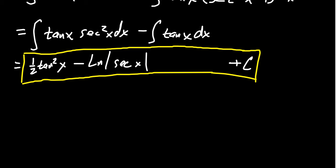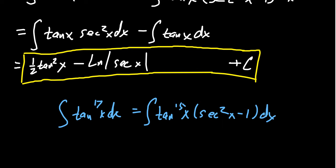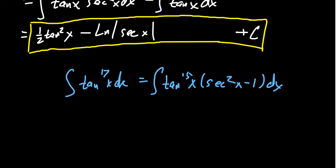So, if we did something like take tangent to the 17th of x dx, what you do is you replace this with tangent to the 15th times secant squared x minus one dx. So you distribute. On the first integral, you would have tangent to the 15th secant squared x dx minus tangent to the 15th dx.